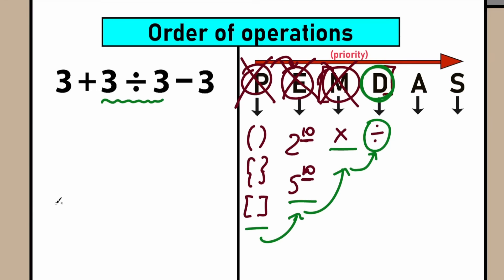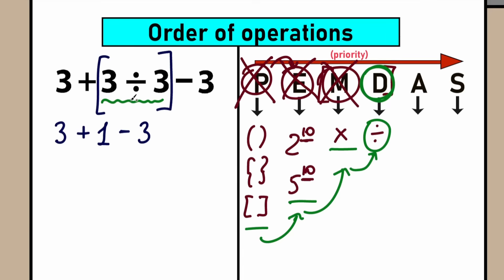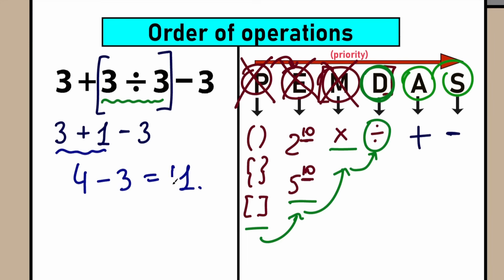So we need to perform division first. Let's do this from left to right. We have 3 plus 3 divided by 3 — and 3 divided by 3 equals 1. So we have 3 plus 1 minus 3. Then we perform addition and subtraction. A stands for addition, S stands for subtraction. So 3 plus 1 equals 4, and 4 minus 3 equals 1. The correct answer to our question is 1 according to PEMDAS.